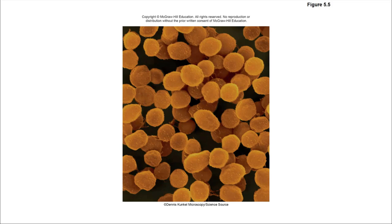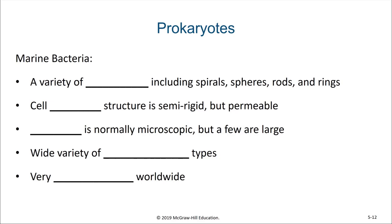Next, we'll spend a little bit of time talking about marine bacteria. They come in a variety of shapes, including spirals, spheres, rods, and even ring-shaped bacteria. Their cell wall structure is semi-rigid but permeable. When it comes to size, they are normally microscopic, but there are some examples of large cells in marine bacteria, often in oxygen-poor environments. As with the archaea, we see a wide variety of metabolic types.